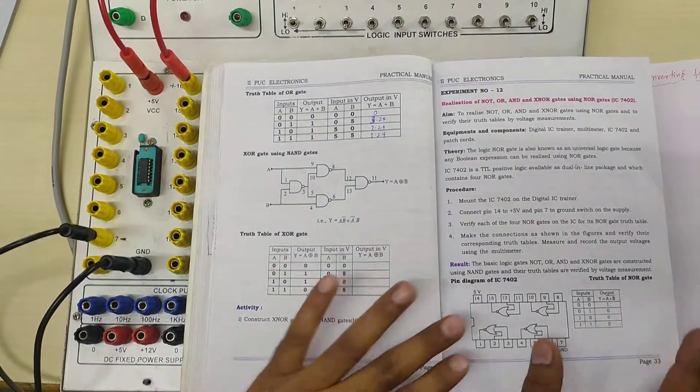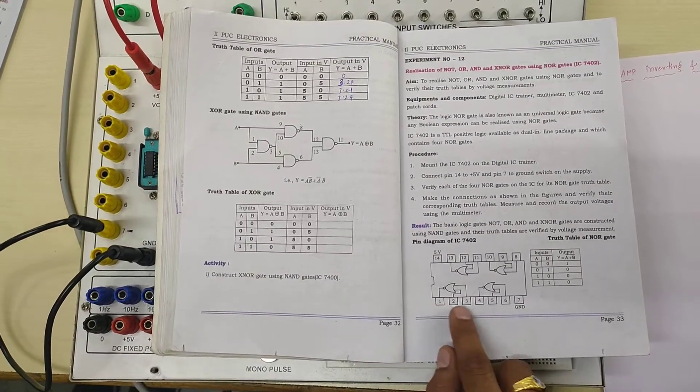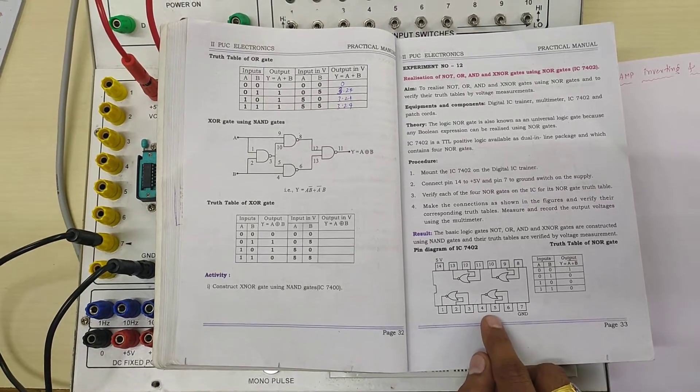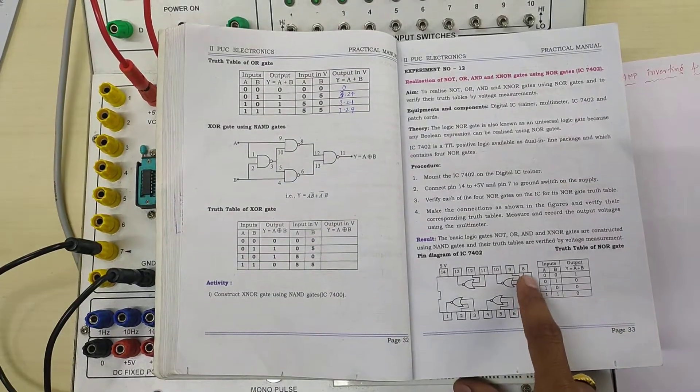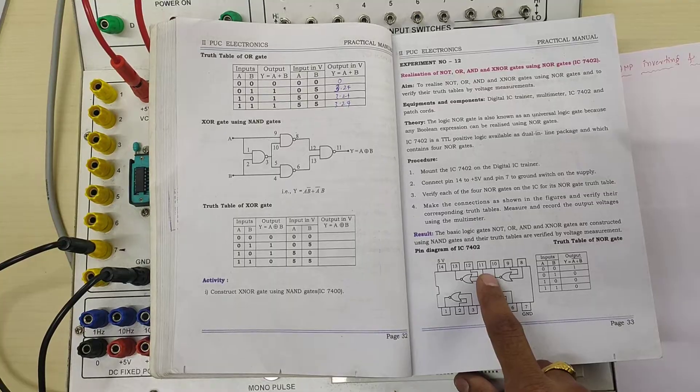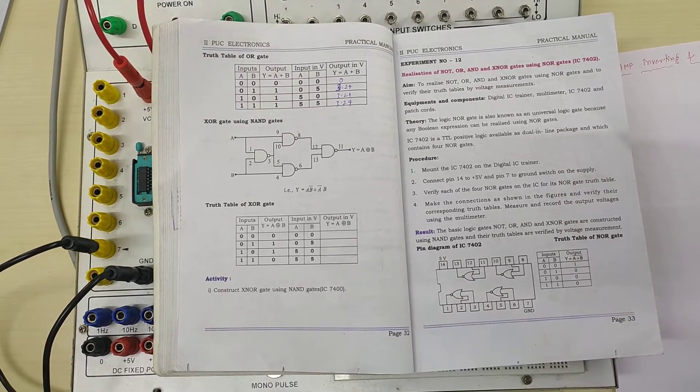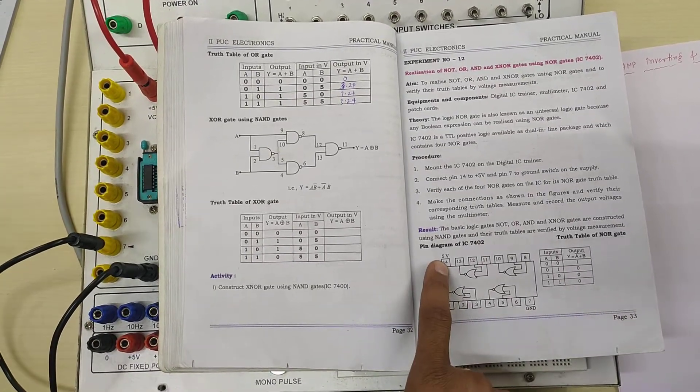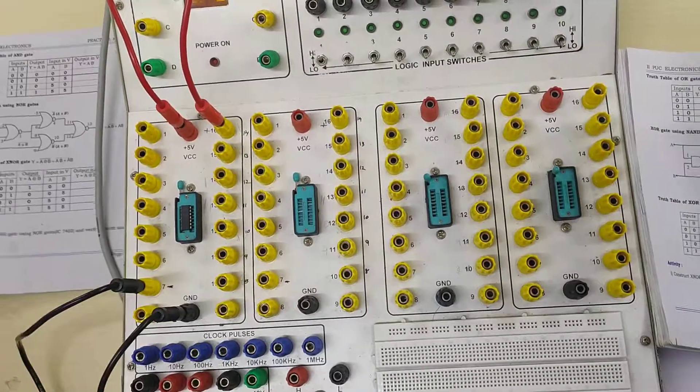But it is exactly, 1 is the output, 2 and 3 is the input, 4 is the output, 5 and 6 is the input, symmetry exactly same, then 8 and 9 are, 10 is the output, then 11 and 12 are the inputs, 13 is the output. Is it clear? Is it easy to remember? Yes sir. Same like this 7 is anyway ground only, 14 is VCC only. Then it is not taking much time. It is very easy experiment.